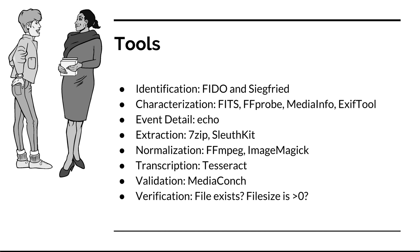The tools are divided into these categories, and some of these are brought into Archivematica during installation. We have identification, which uses FIDO and Siegfried. For characterization, we use FITS, FFProbe, MediaInfo, and EXIFTool. For event detail, we use a Linux-based tool, Echo. For extraction, we use 7-Zip and the SleuthKit.